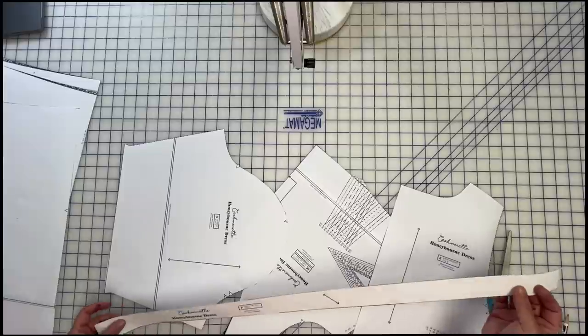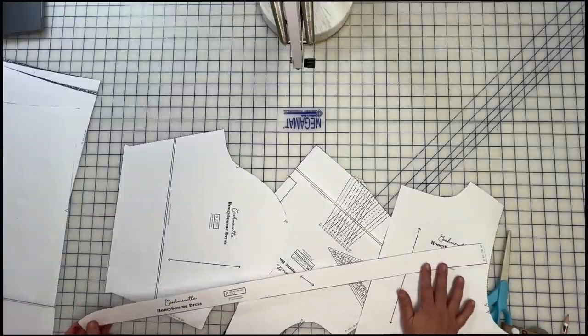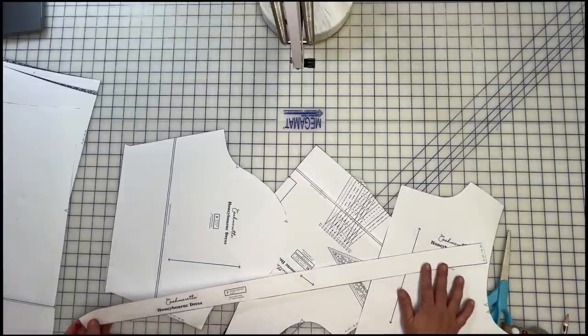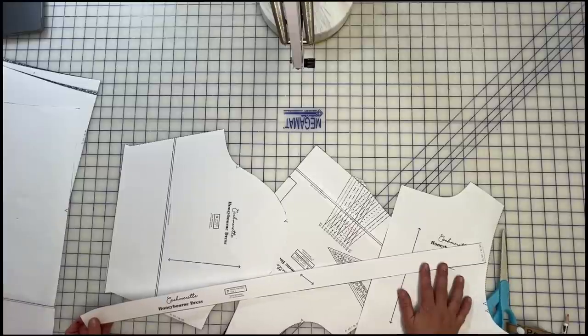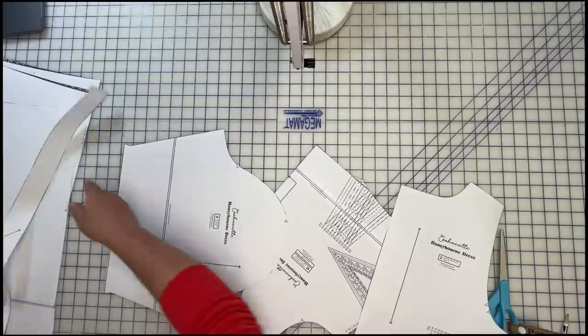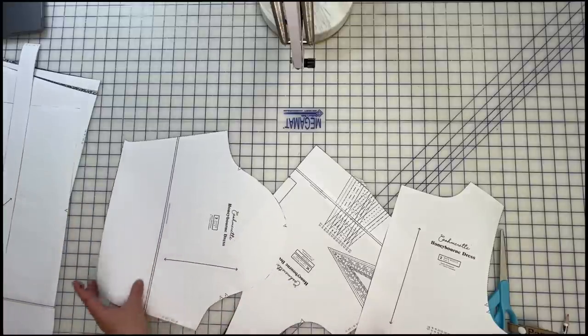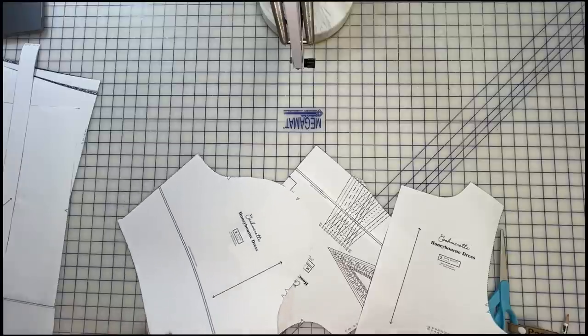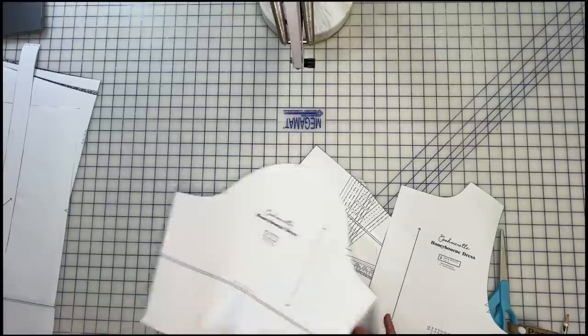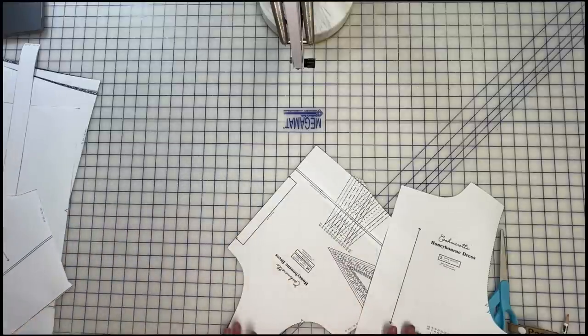It also comes with a neck facing. I guess this gets finished off like bias. It does. So it's got like bias tape to finish off the neck edge, which I'm going to show you if you don't want to do that, how we can get around that, and then the sleeve, and then obviously the front and the back.